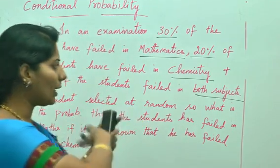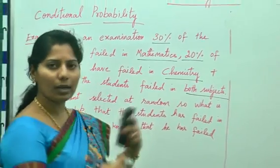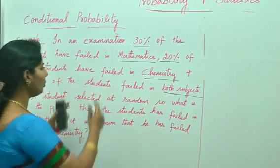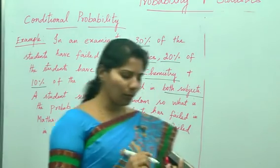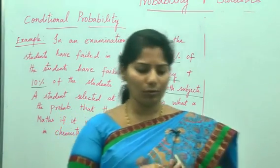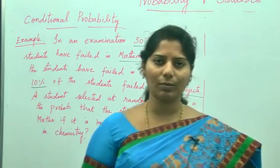If you have taken the vice versa, the other way, then accordingly you will take P of B given A. According to probability, the statement is always very important. They will check for the statement.